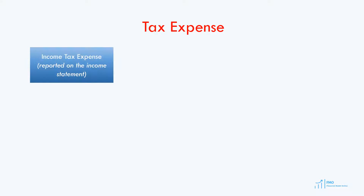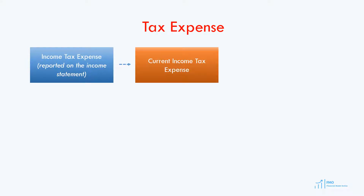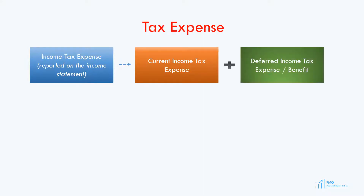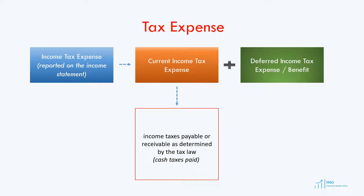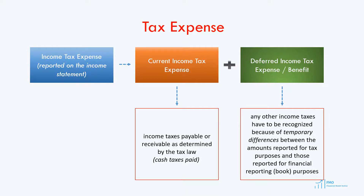The tax expense on the income statement will include the current income tax expense plus deferred income tax expense or benefit. Current income tax expense is income tax expense payable in accordance with the tax code — these are the cash taxes payable using the relevant country's tax law. Deferred income tax expense is any other income taxes recognized because of temporary differences between the amounts reported for tax purposes and those reported for financial reporting purposes.